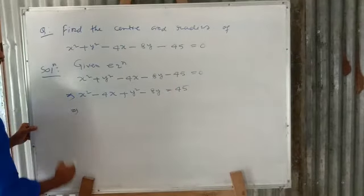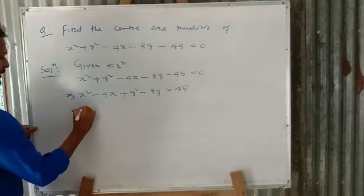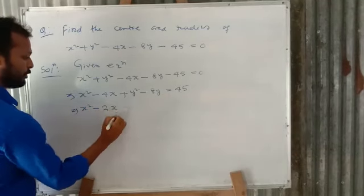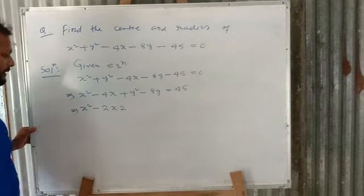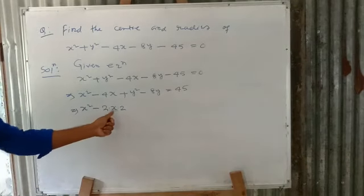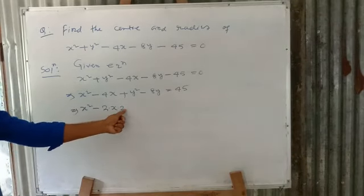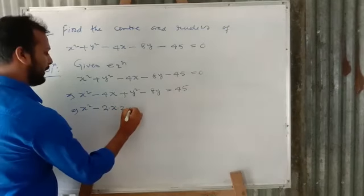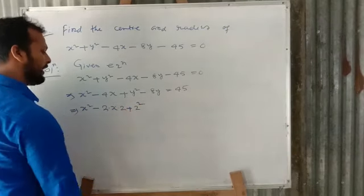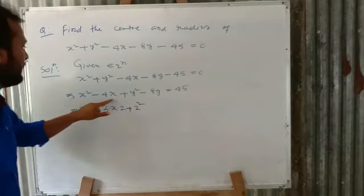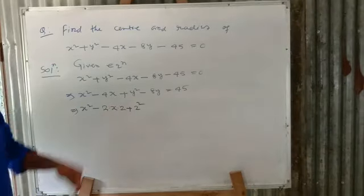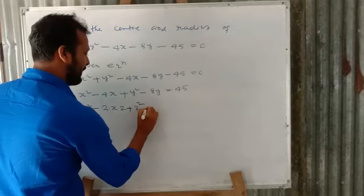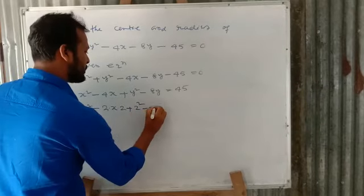This implies x² − 2×2×x, where b means 2. So 2×2 = 4x. We add 2² to complete the square, and since 2² is not already present, we write +2² and then −2².